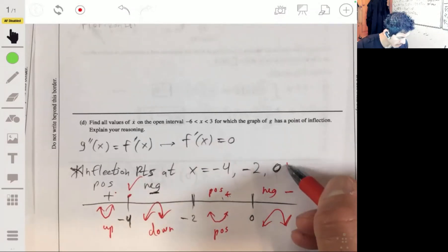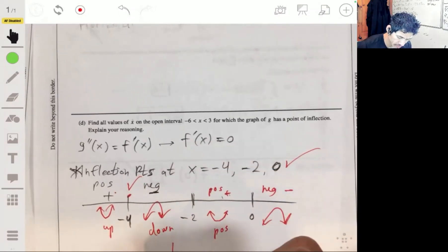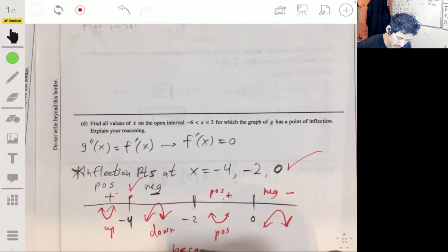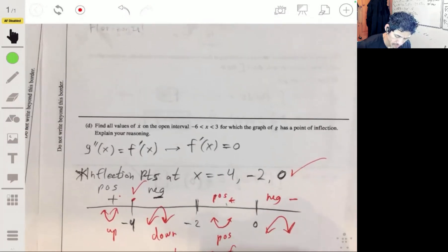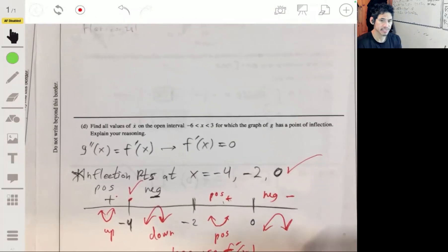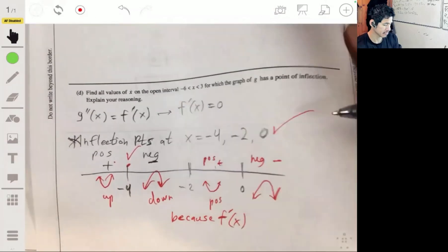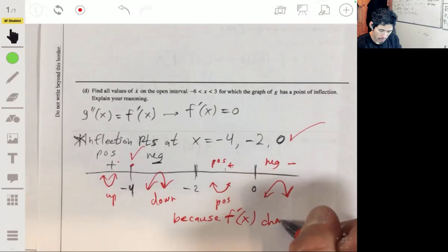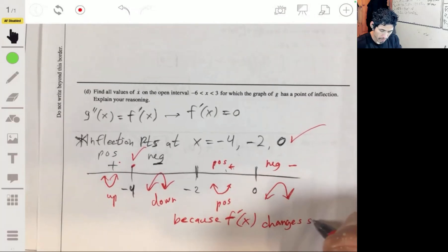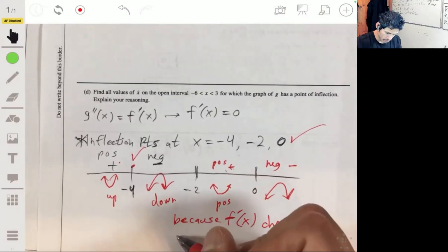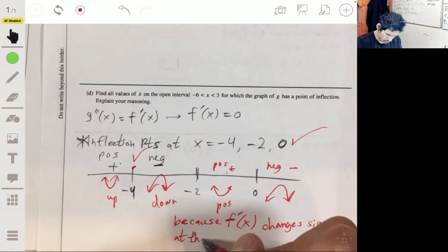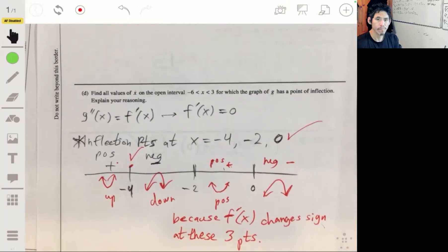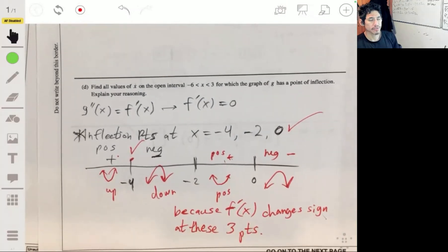We got inflection points on all of them. Wow. Okay, so we're good. And we could say, because f prime of x changes signs there, changes signs at these three points. All right. So there you go. That's it for that free response question.